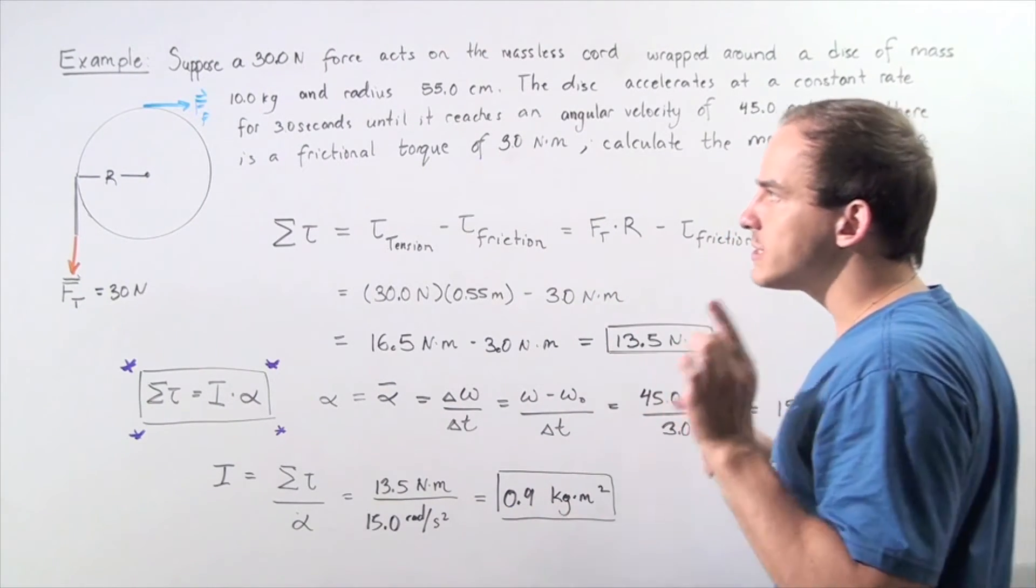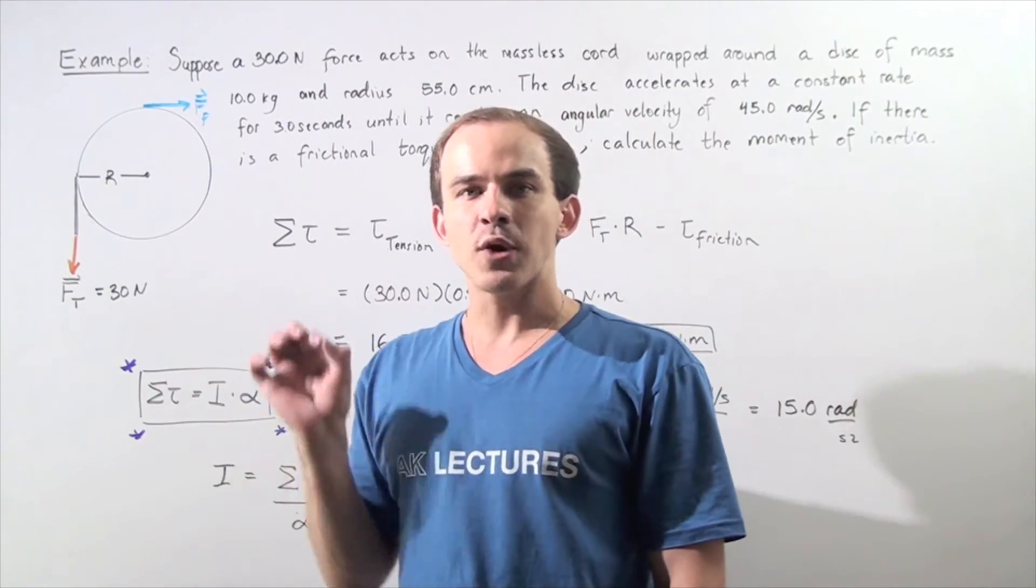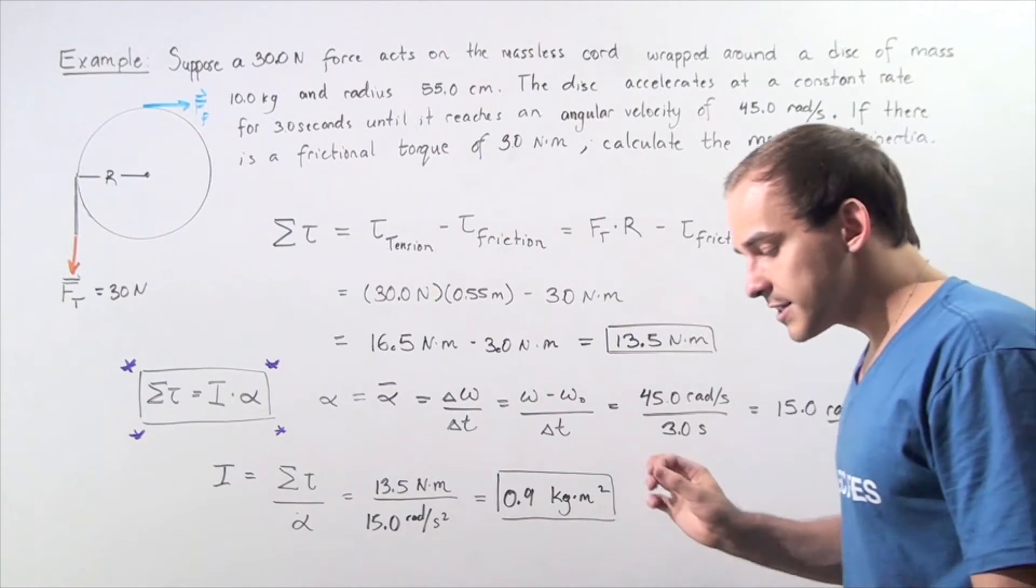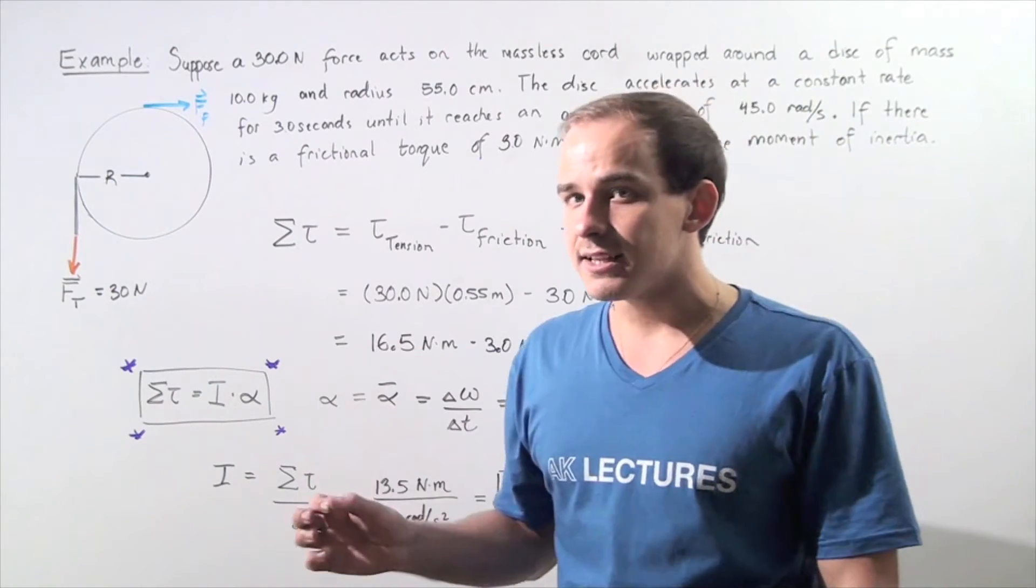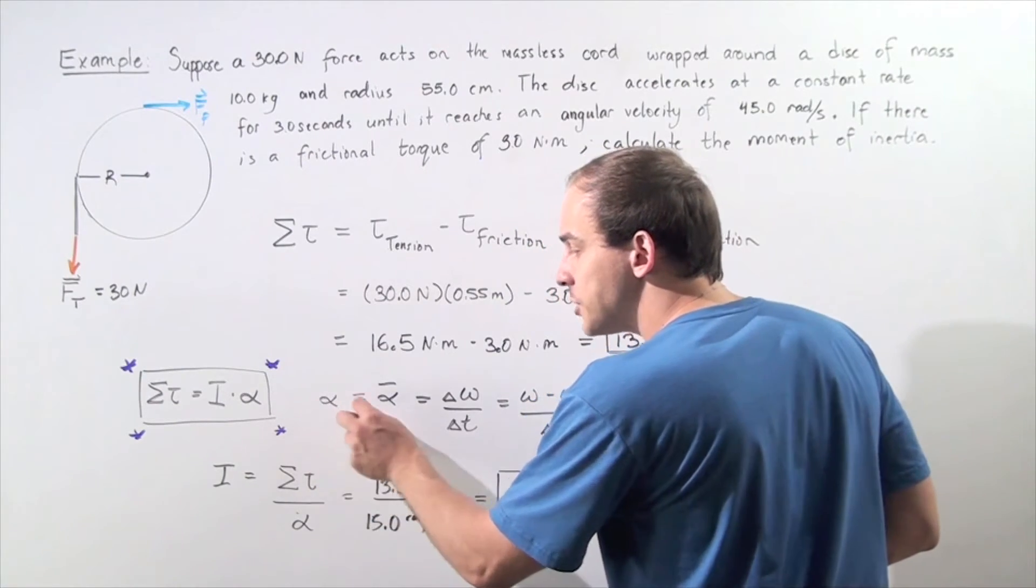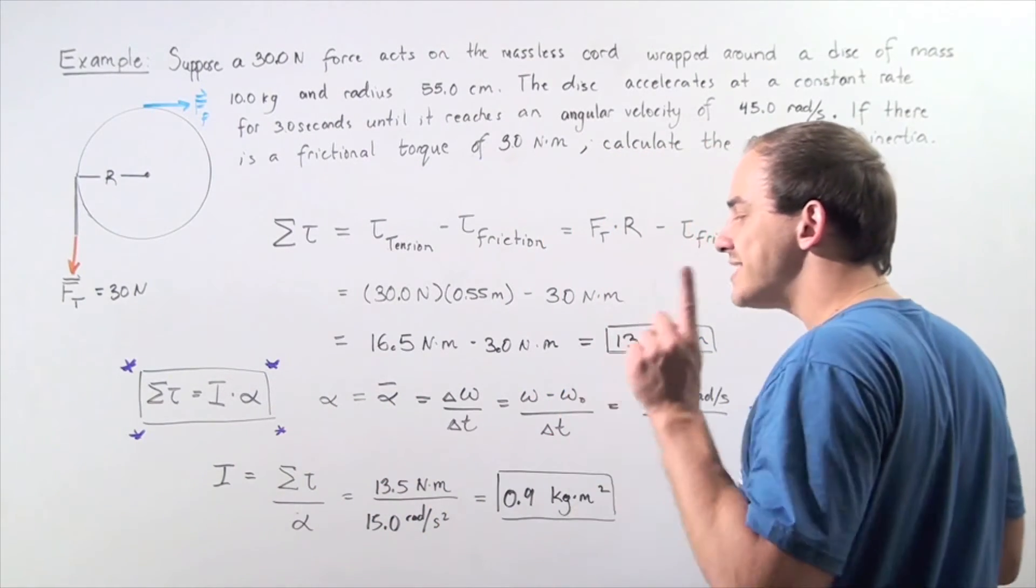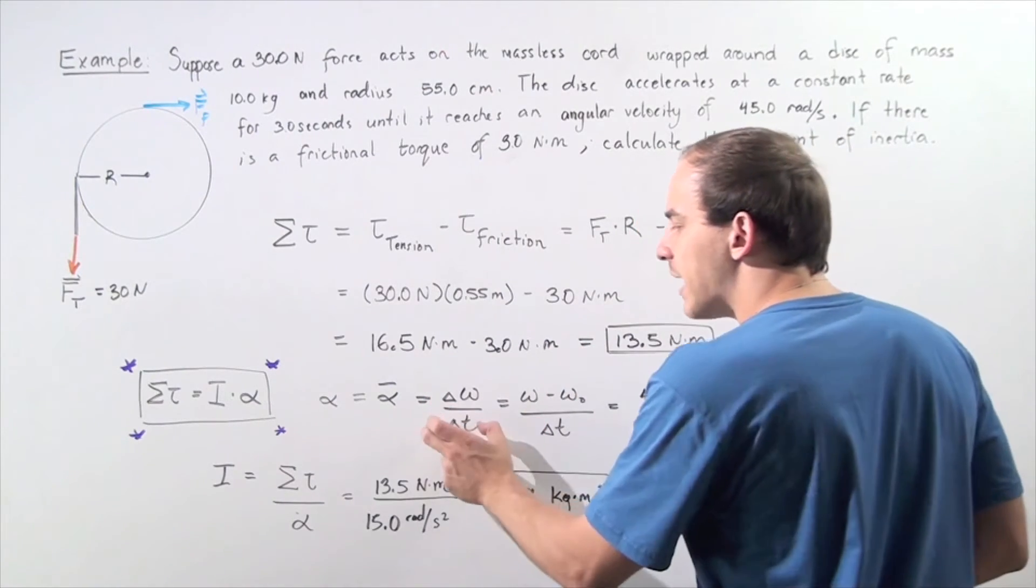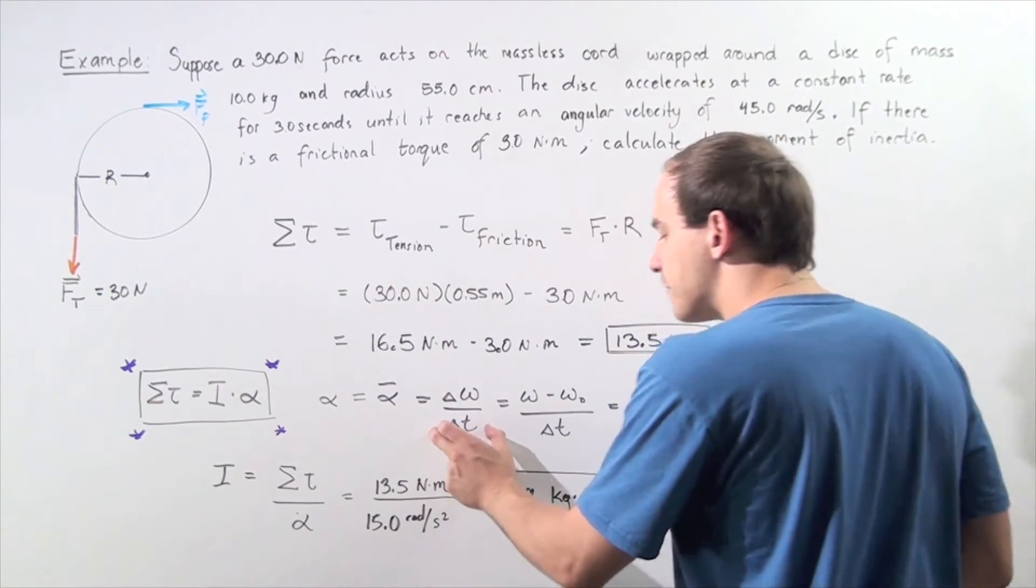Now we find the instantaneous acceleration. Because the angular acceleration is constant, the instantaneous acceleration equals the average acceleration, which is the change in angular velocity divided by the change in time.